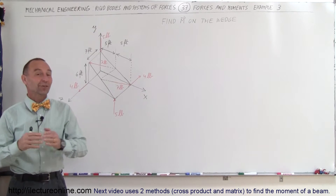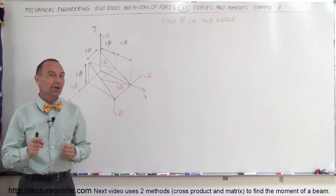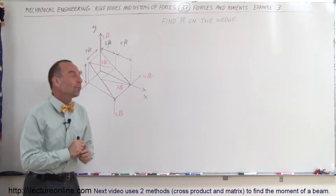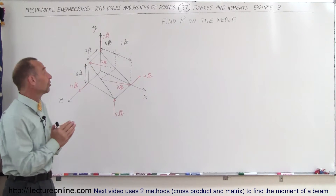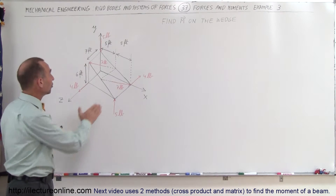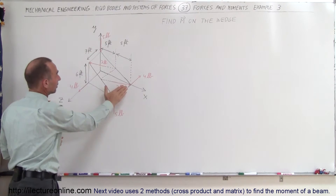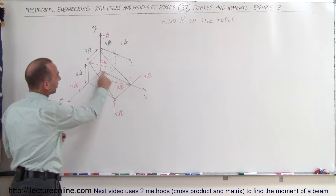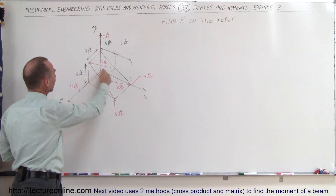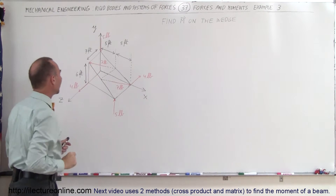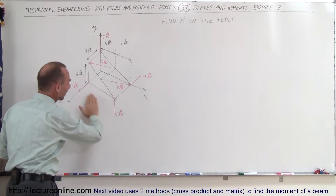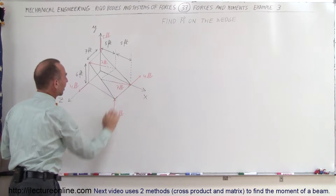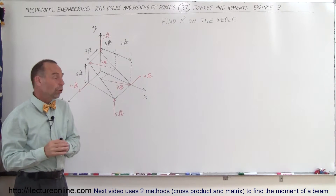Welcome to ElectronLine. Here's another example of how to find the moment of a number of forces. Notice there are six forces on this wedge. There's the wedge right here — it is 10 feet long, 7 feet wide, and 6 feet high on one side. It comes all the way down to the XZ plane on the other side. There are six forces.